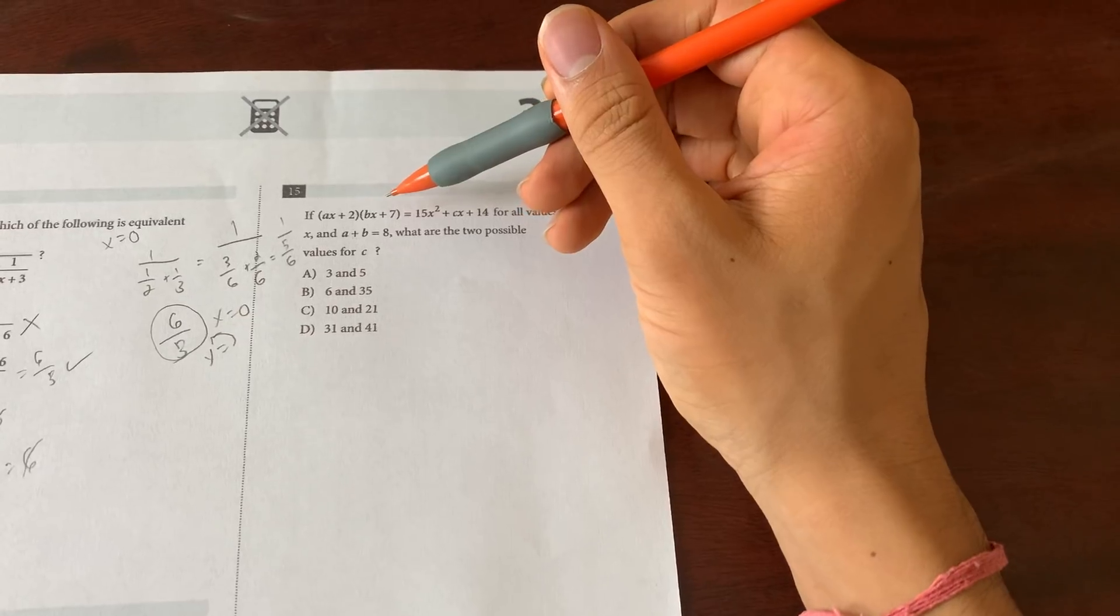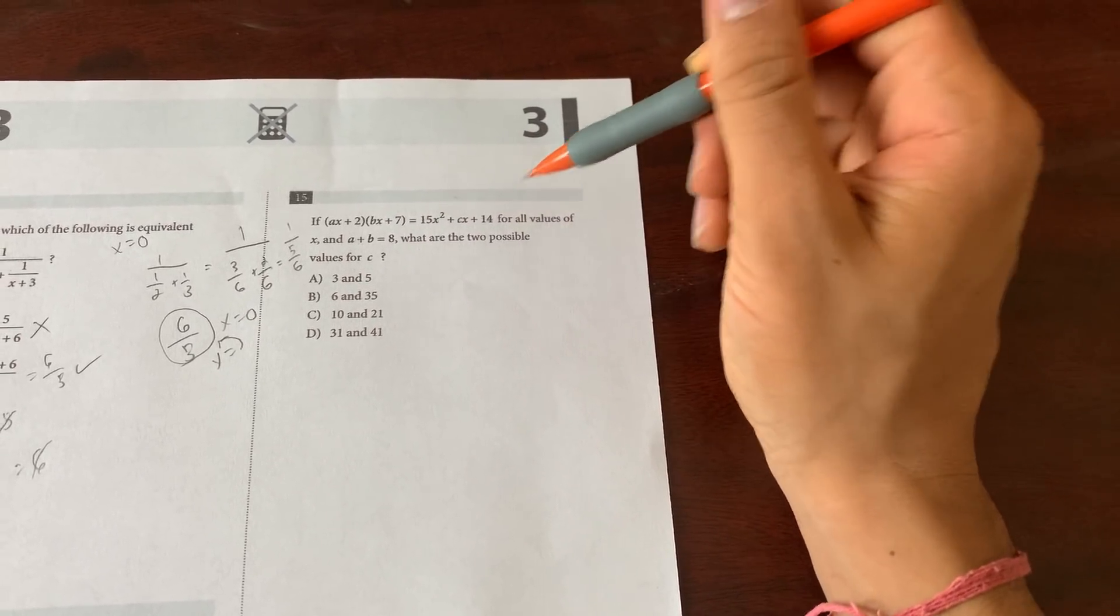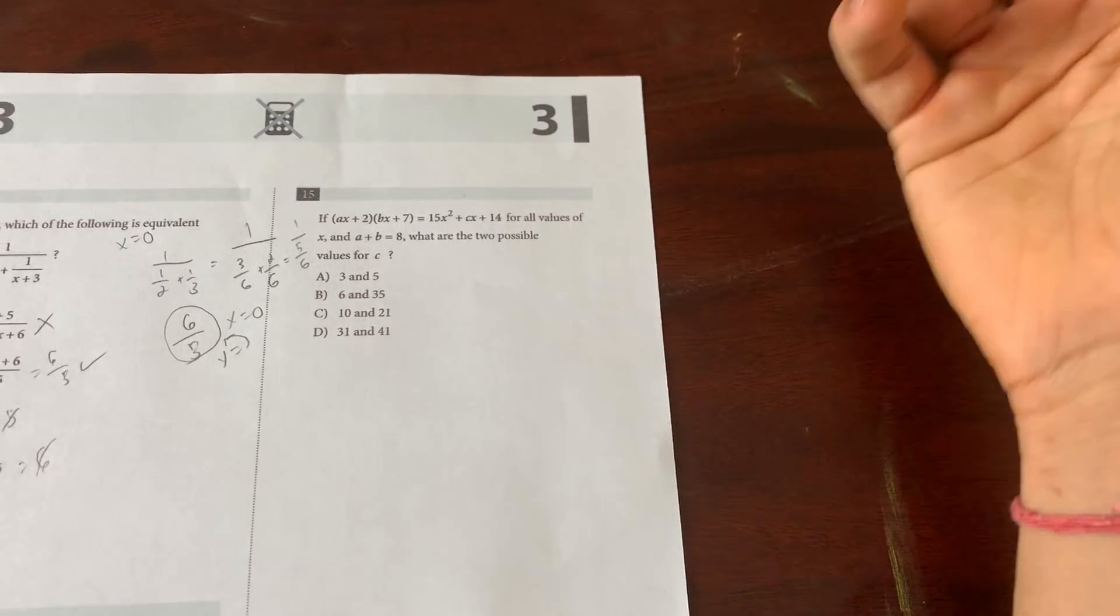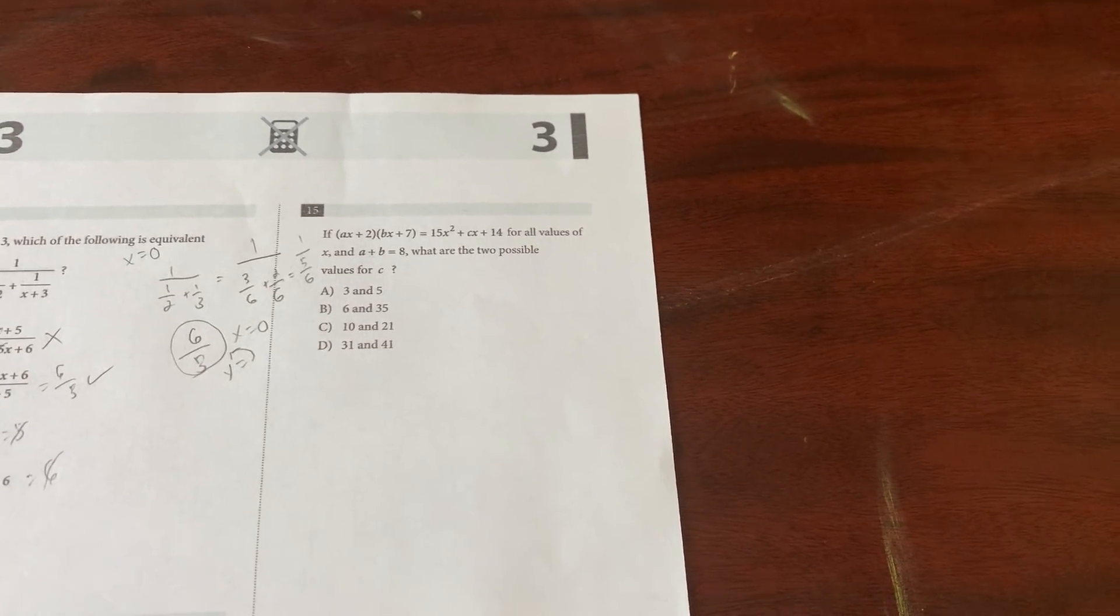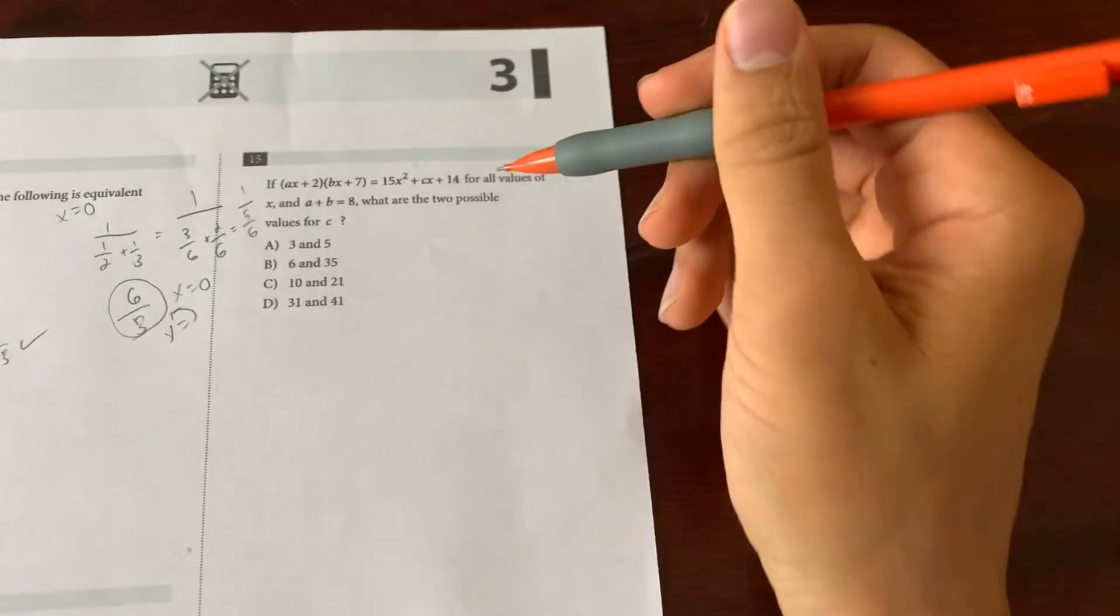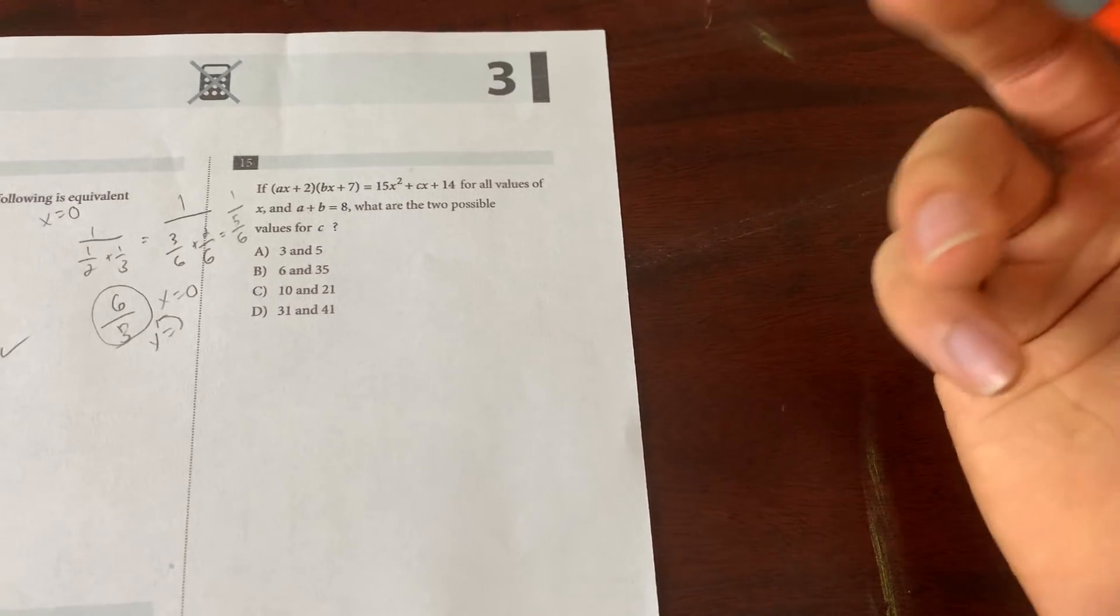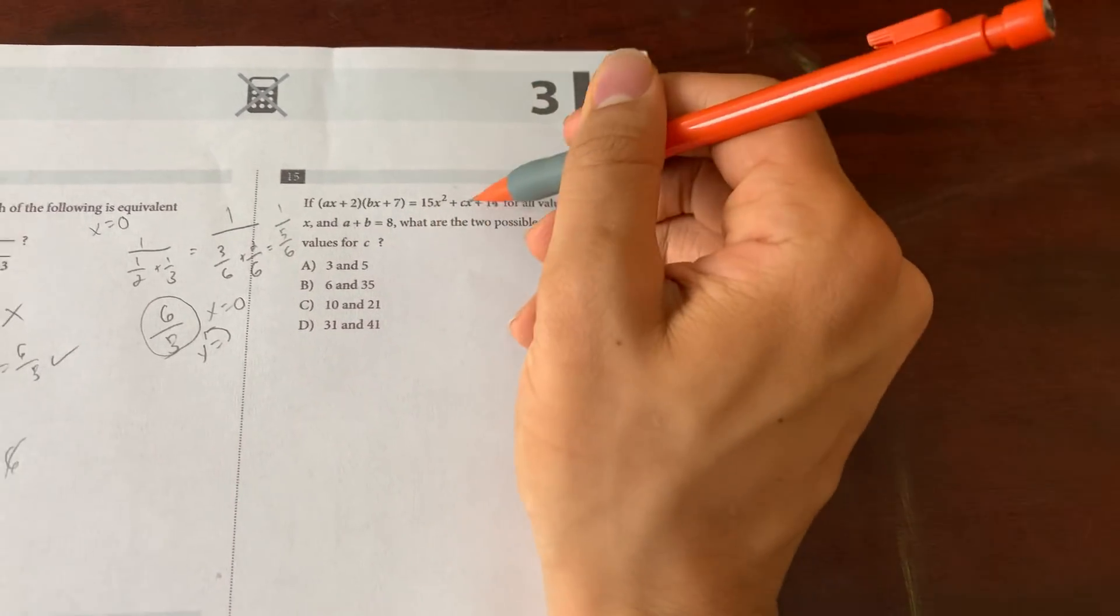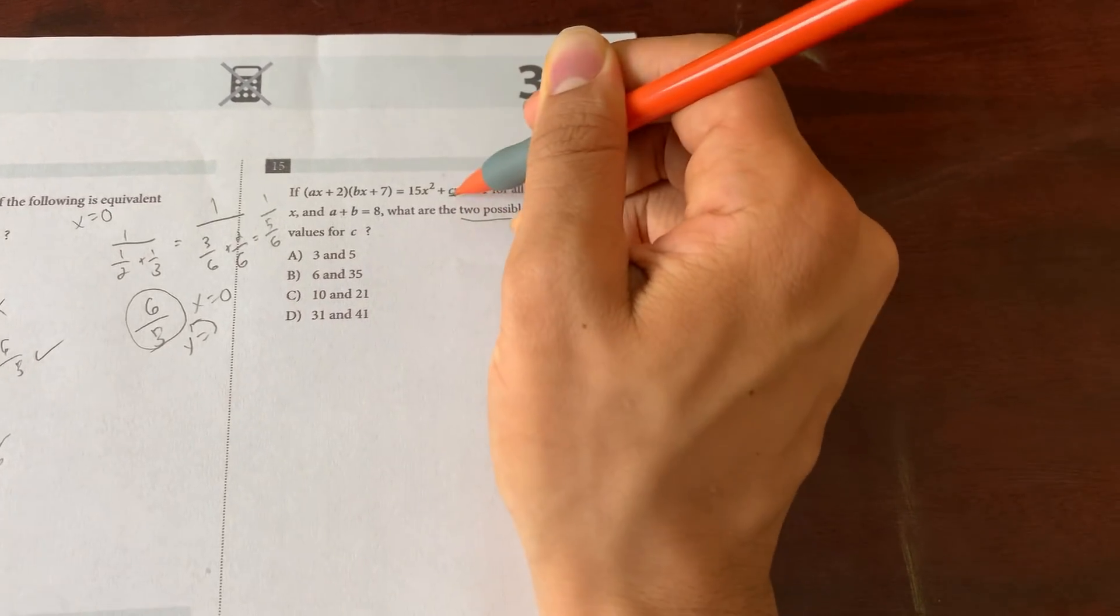Now this one right here: if (ax+2)(bx+7) equals 15x² + cx + 14 for all values of x, and a+b equals 8, what are the two possible values for c? A problem like this is what you see on SAT a lot. It's just worded weird and it's not like a direct question. This is just worded weirdly and you're just like 'all right, what is it trying to ask me?' You're trying to find the values of c, okay. So what this basically is saying is that there's two possible values of c.